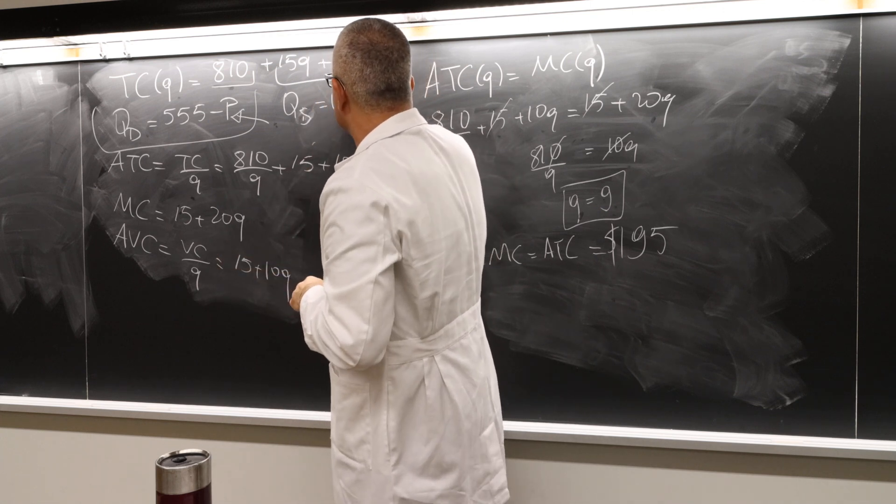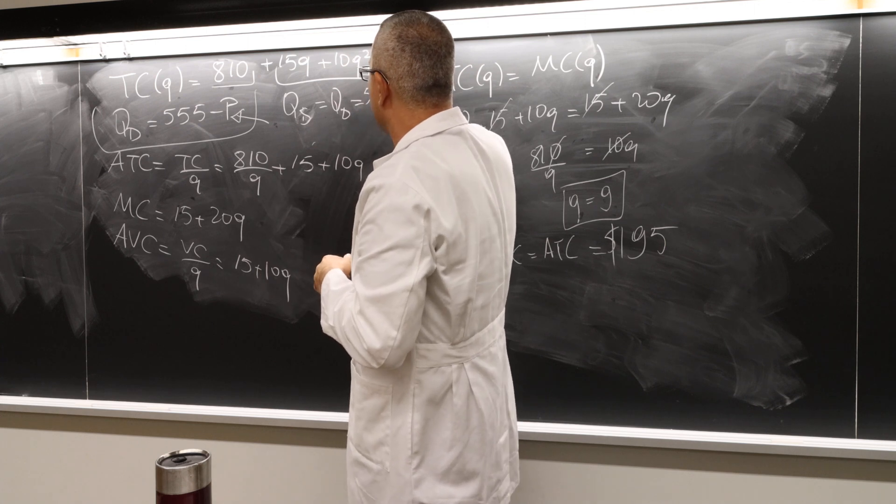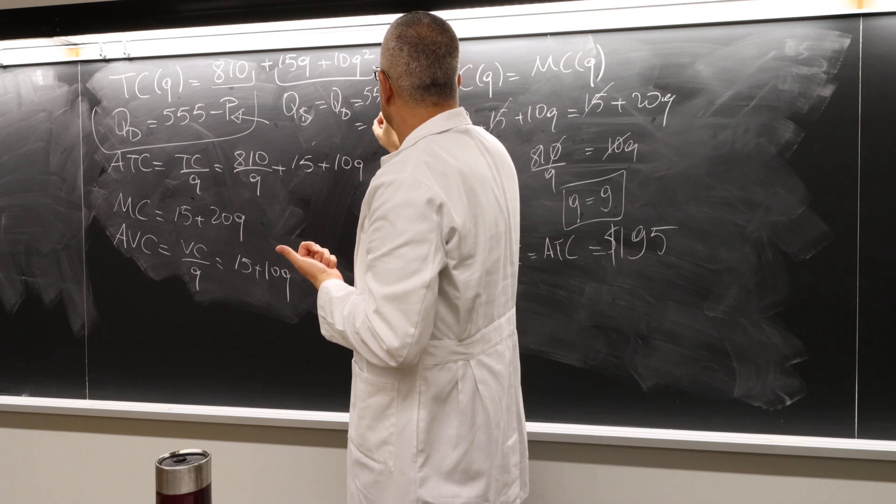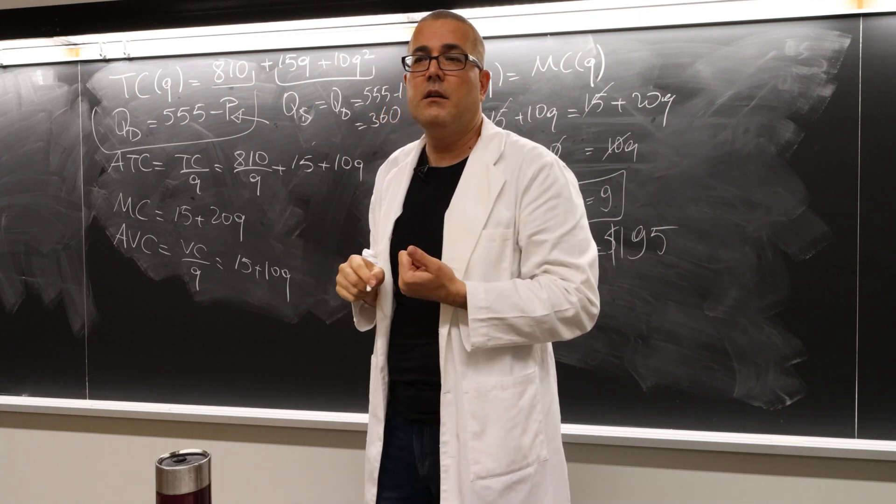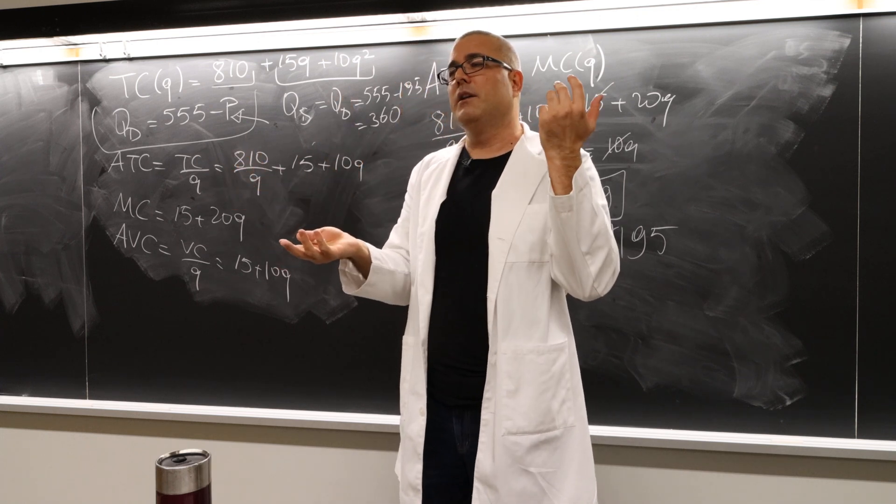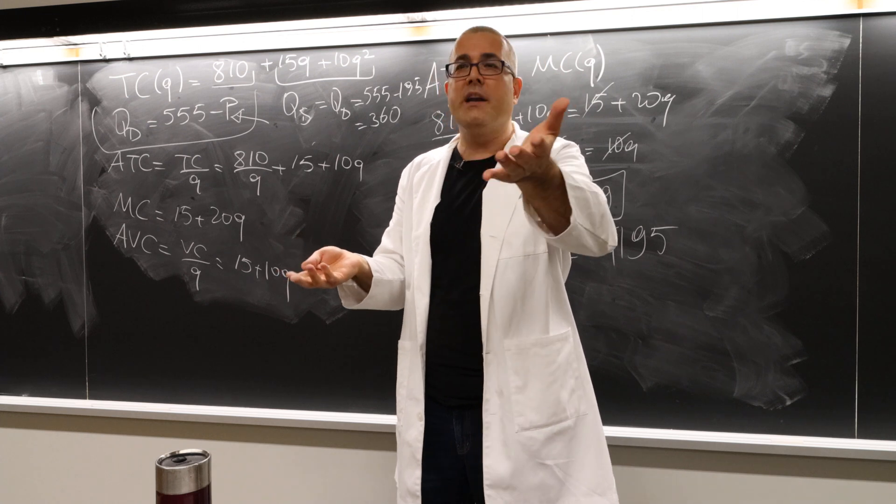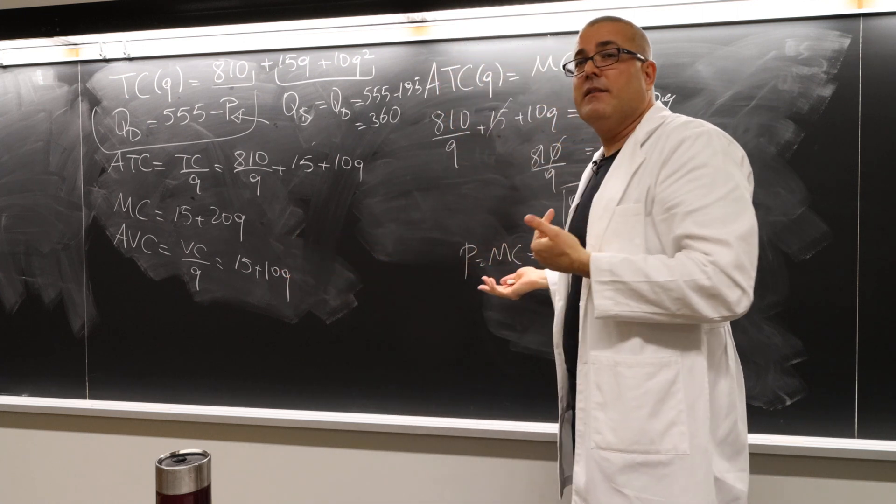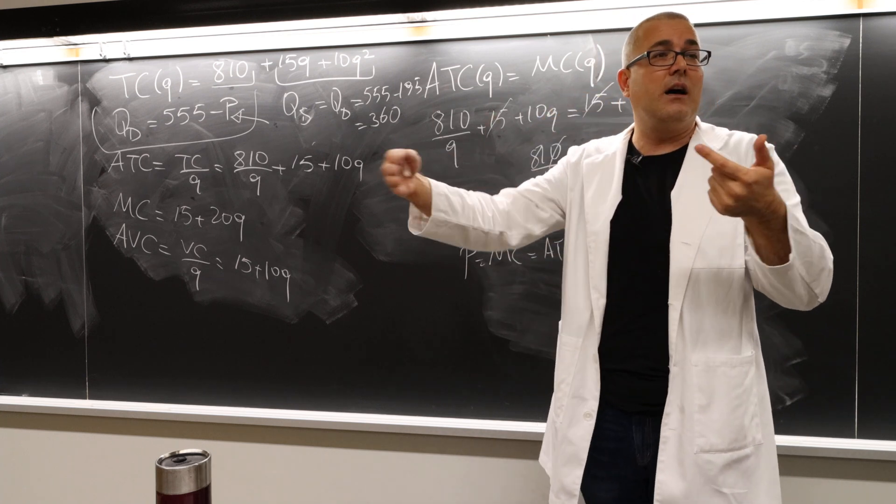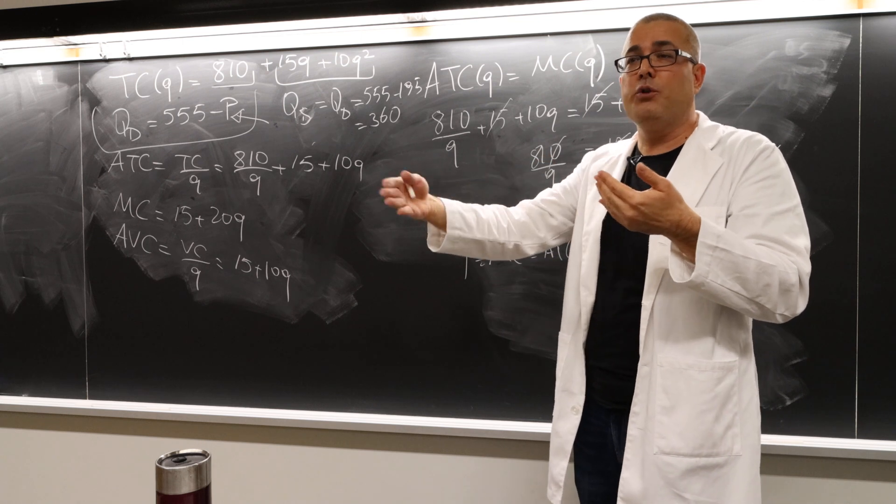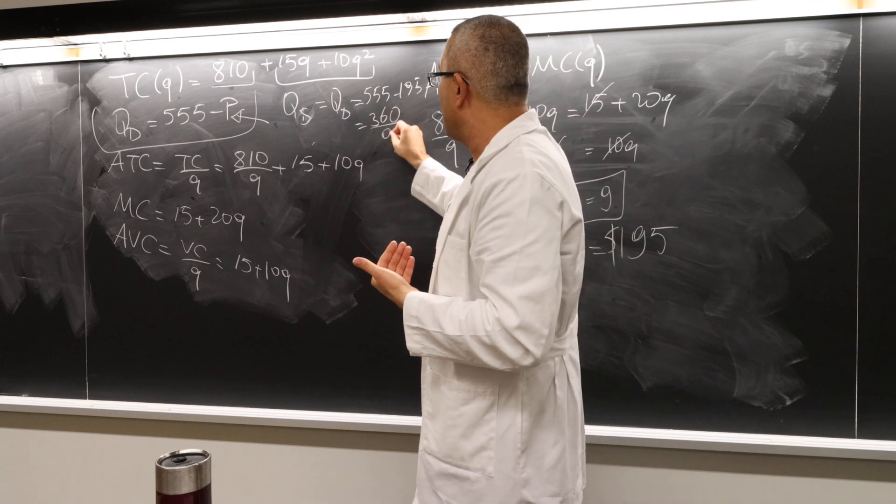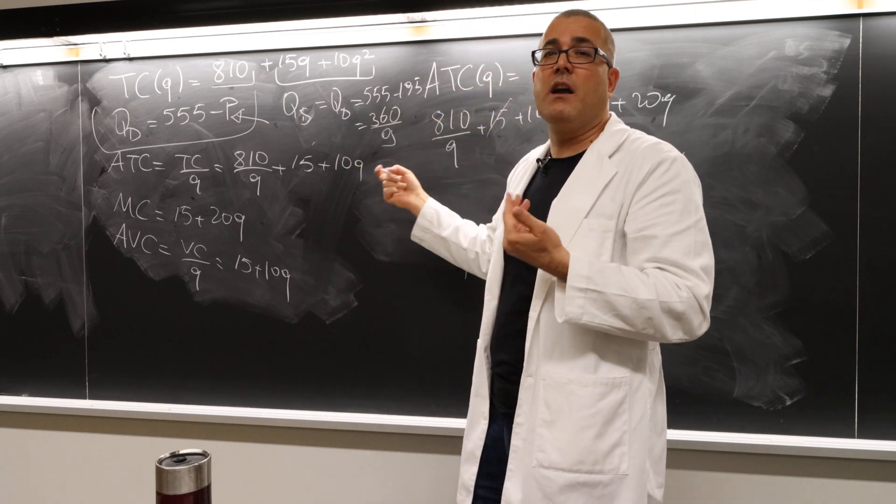So market supply equals market demand, which is equal to 555 minus 195, which is 360. So this is total quantity supplied. Well, each stand, Nakata is going to produce nine, but there's a bunch of identical hot dog stands. So each of them is going to produce nine, no more, no less. So then how many hot dog stands do I need? Well, 360 divided by nine. It's 40.